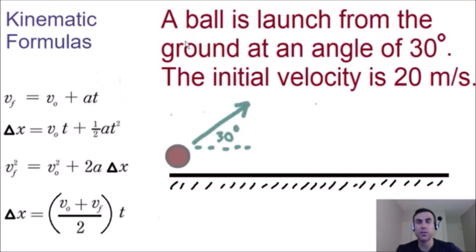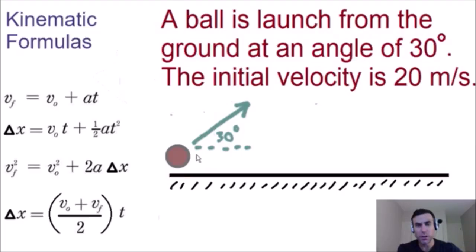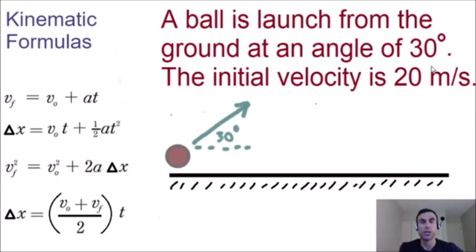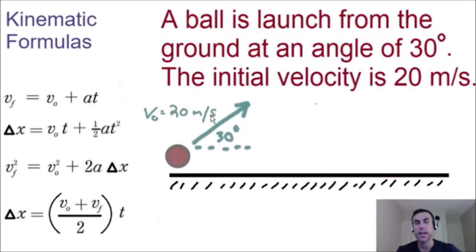In this example, a ball is launched from the ground at an angle of 30 degrees. Notice how this ball being launched from the ground forms a 30-degree angle with the ground. We also know that the initial velocity is equal to 20 meters per second. Given this information, we're going to answer three questions.